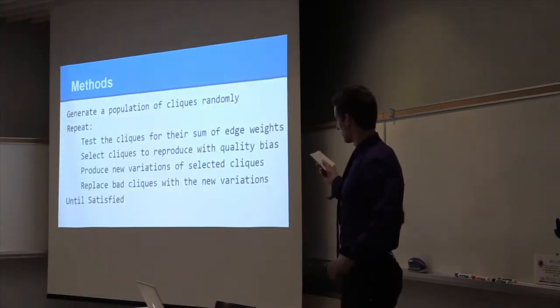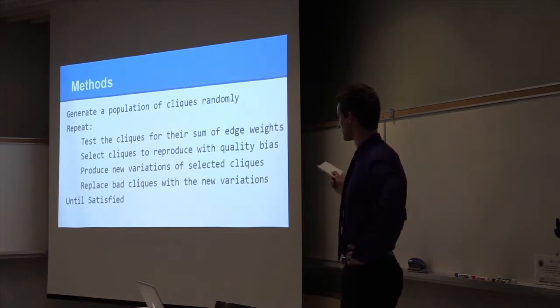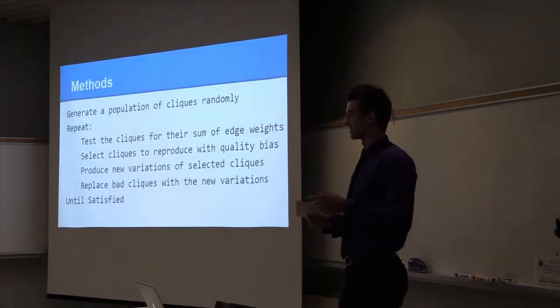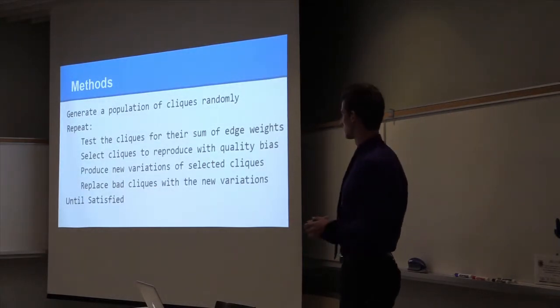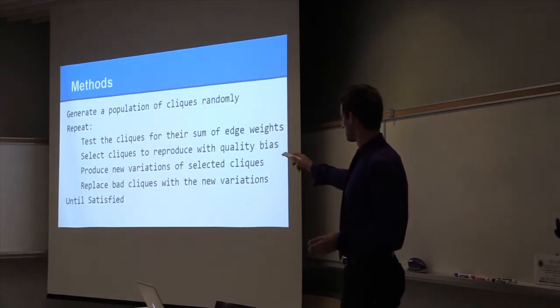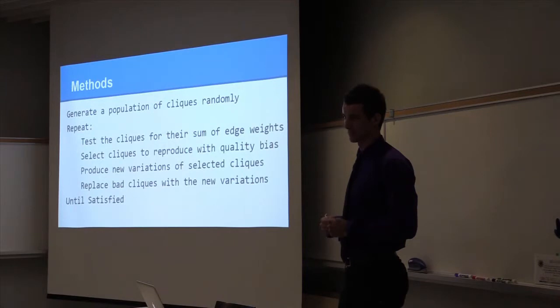So this is just a quick rundown, pseudocode of the evolutionary computation. So generate a population of cliques randomly, so that's going to be a population of random permutations of the integers from one to number of features. And then the first K integers of that permutation identify our clique. So then test the cliques for their sum of edge weights, select cliques to reproduce with quality bias for the tournament selection.